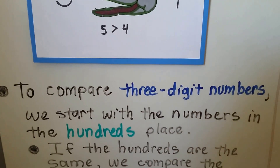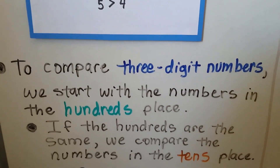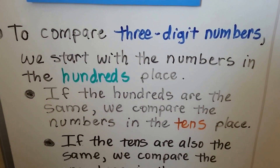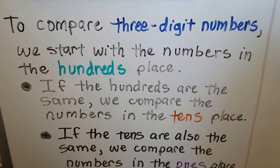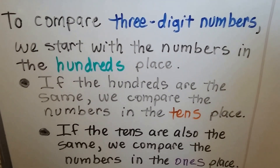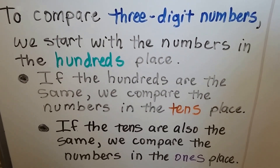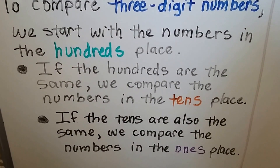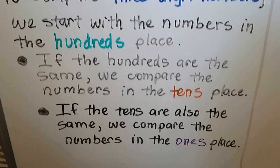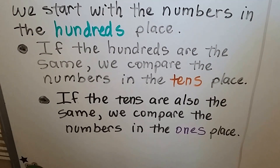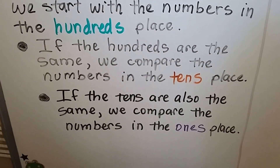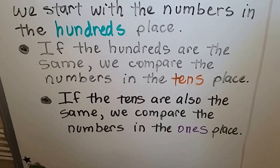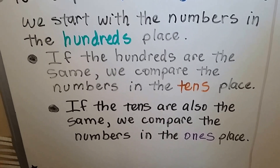To compare three-digit numbers, we start with the numbers in the hundreds place. We compare them. If the hundreds are the same, we compare the numbers in the tens place. If the numbers in the tens place are also the same, then we compare the numbers in the ones place.